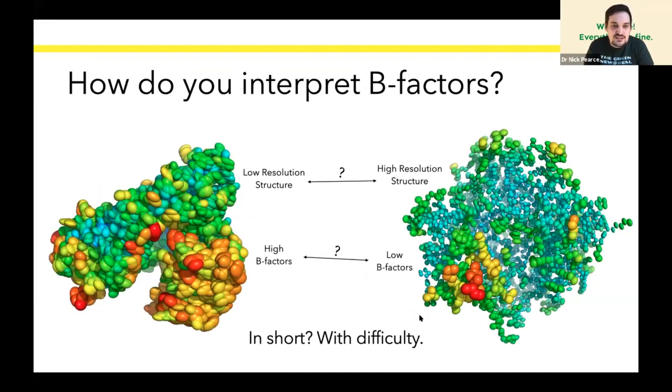And then the question that I'm going to be trying to address today: how do you interpret B-factors? Basically, we don't, as far as I'm concerned. There are a few approaches out there, but to me, none of them are particularly satisfactory. The problem is that your low resolution structures have large B-factors, and you have high resolution structures which have small B-factors. There are no real ways that conveniently compare between two arbitrary structures at different resolutions.